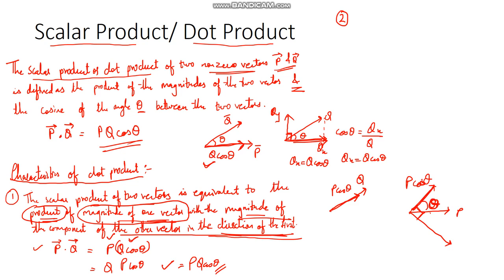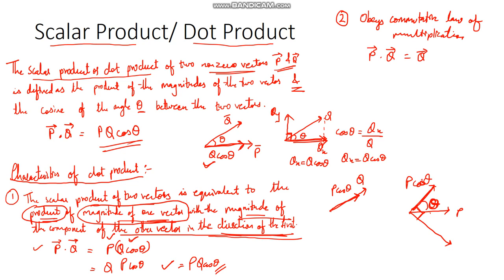The next characteristic is that the dot product obeys the commutative law of multiplication. This means p dot q equals q dot p. We can verify this: p dot q = pq cos theta, and q dot p = qp cos theta, which are one and the same.